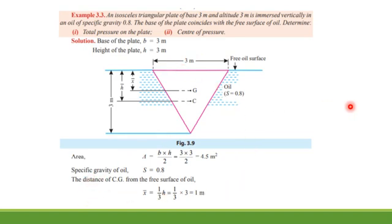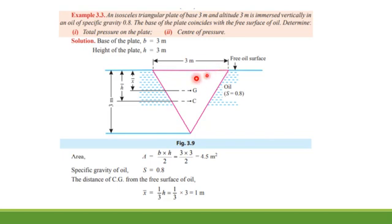To calculate total pressure we need γ, A, and x̄. Gamma is the specific weight of oil, calculated by multiplying its specific gravity (0.8) by the specific weight of water. Area is 4.5 m² as calculated. For x̄, the center of gravity of a triangle lies at h/3 from the base. Since the base is at the free surface, x̄ = h/3 = 3/3 = 1 meter.